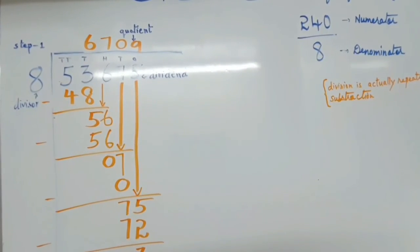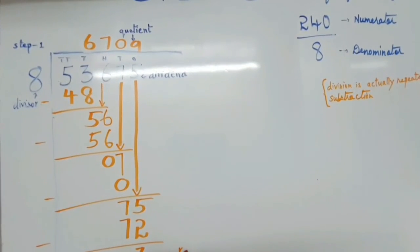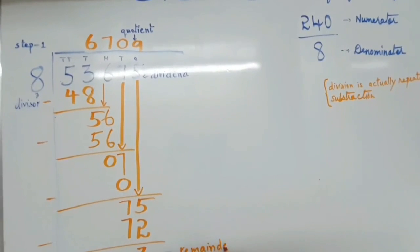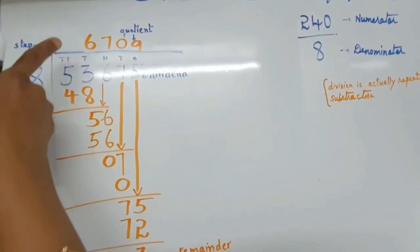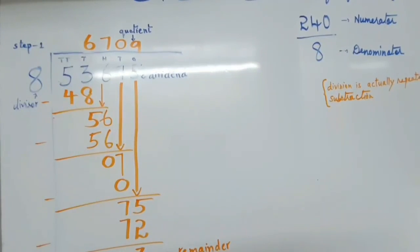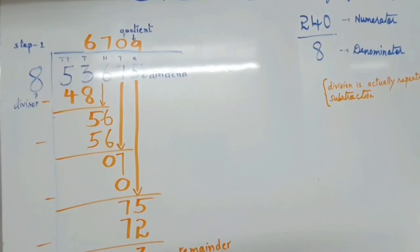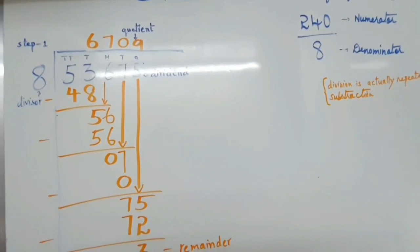So our answer is 3, which is known as remainder. And our quotient is 6,709. That is our answer for this sum.